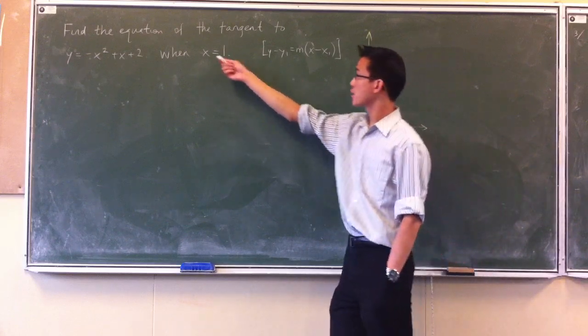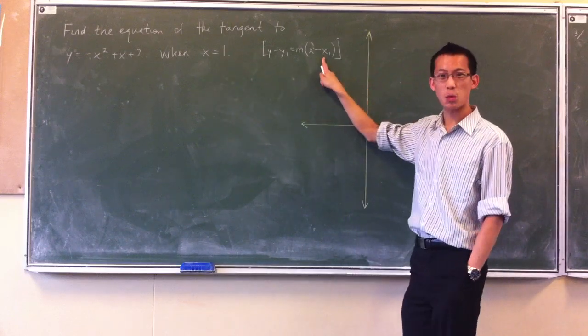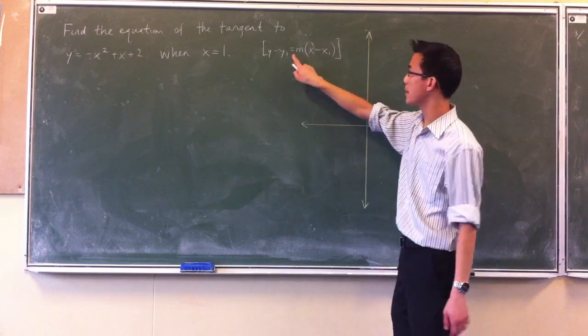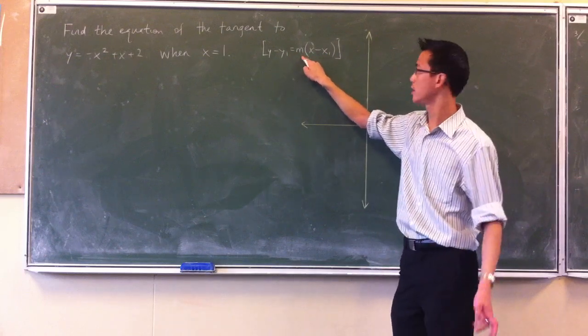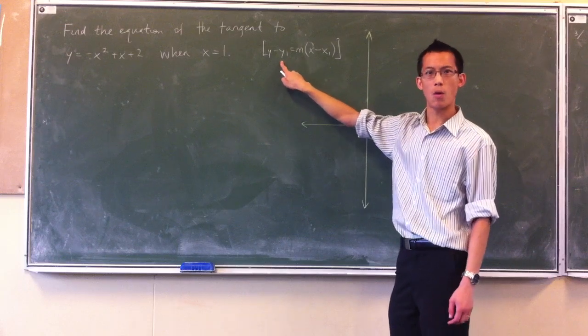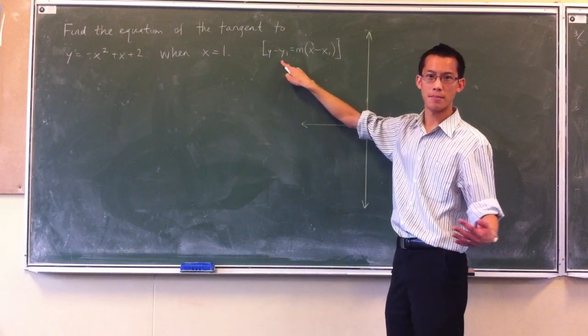Now, we've already been given the x-coordinate here that will correspond to the x1, so what we need to find here is two other pieces: the gradient of the tangent and the y-coordinate, the y1, that the line passes through.